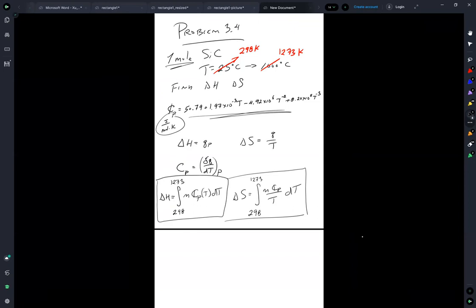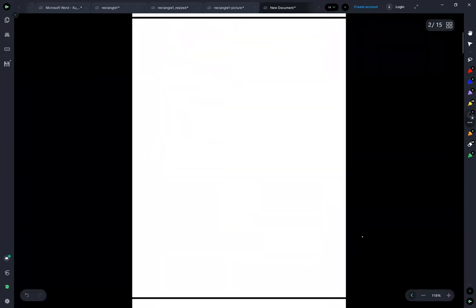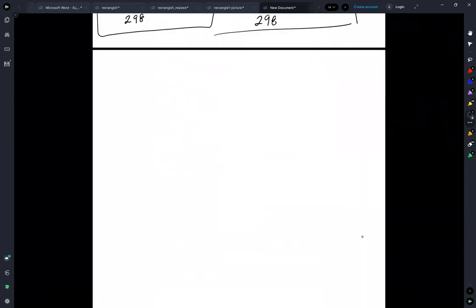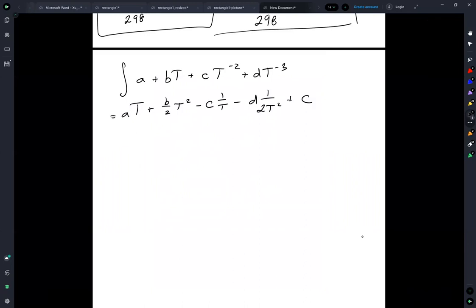So let's do a little bit of calculus. The integral of a plus bt plus ct to the minus 2 plus dt to the minus 3 is equal to a t plus b over 2t squared minus c 1 over t minus d 1 over 2t squared plus a constant.